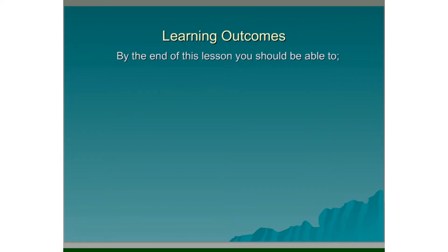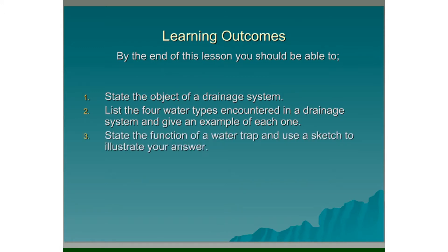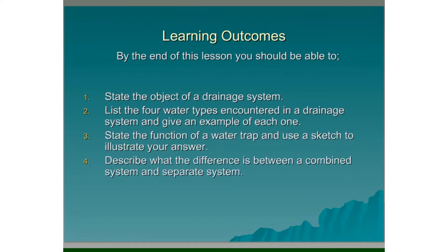Learning Outcomes. By the end of this lesson you should be able to: state the object of a drainage system; list the four water types encountered in a drainage system and give an example of each one; state the function of a water trap and use a sketch to illustrate your answer; describe the difference between a combined system and a separate system and state which system is preferred and why.